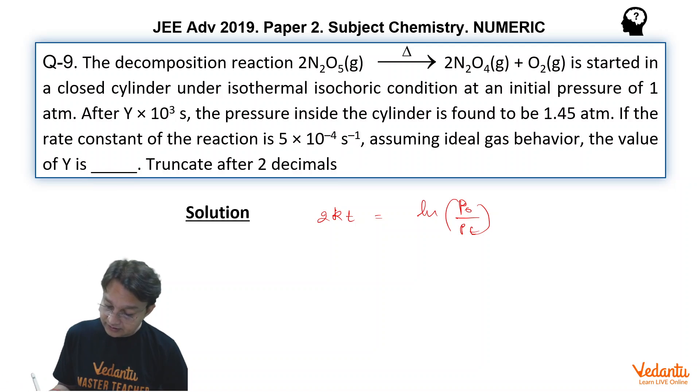To do this, once again, let's write this equation: 2N2O5 breaking into 2N2O4 plus O2. And we can see the initial pressure is 1 atm. After some time, the pressure will become 1-x, this will be x, and this will be x/2. And it is given the sum of these pressures at time t equals 1.45 atm.